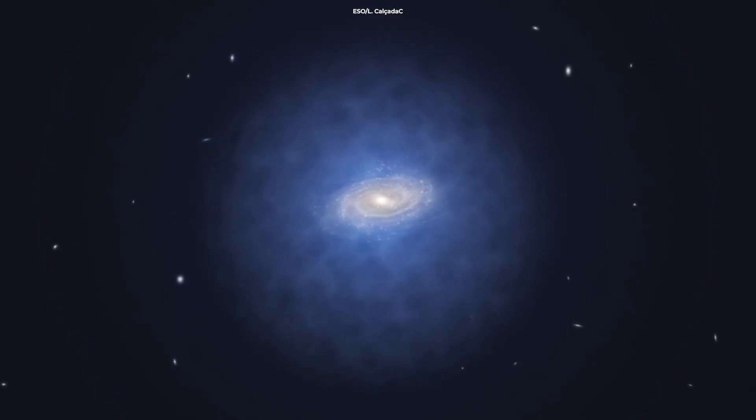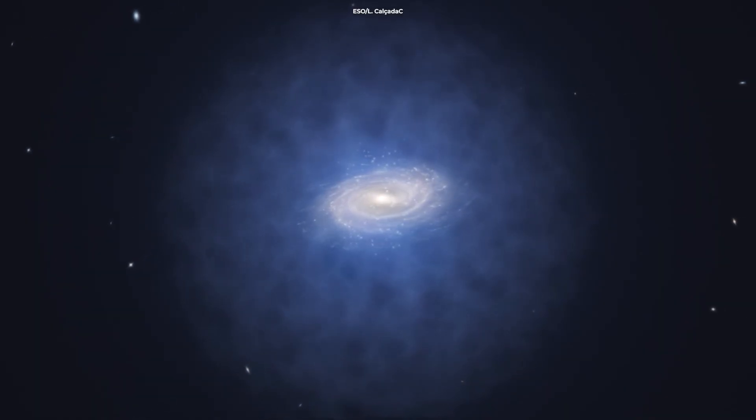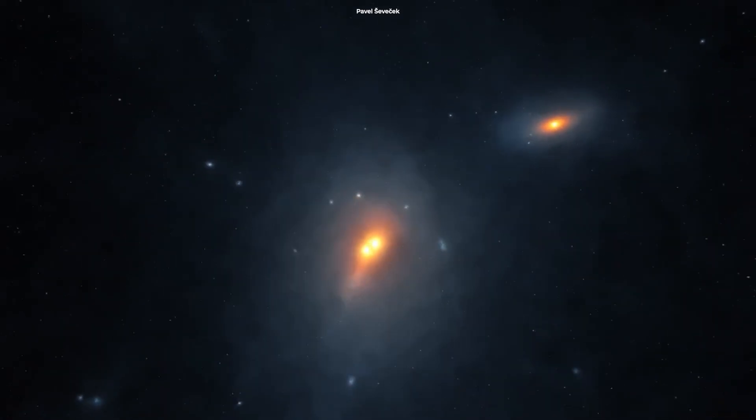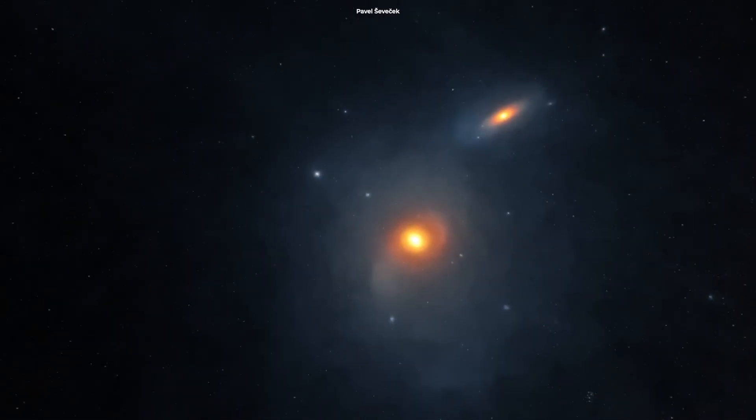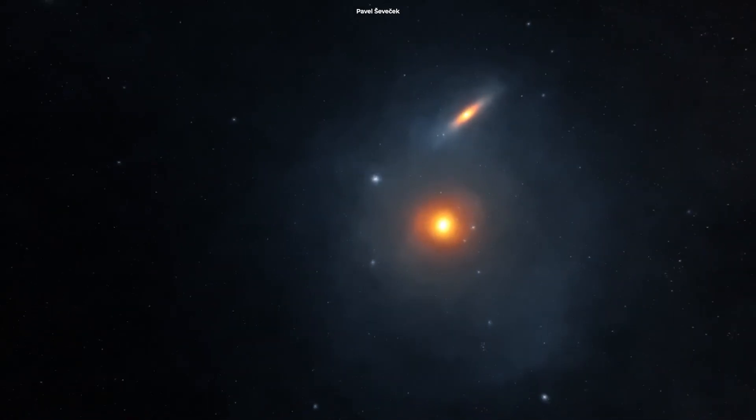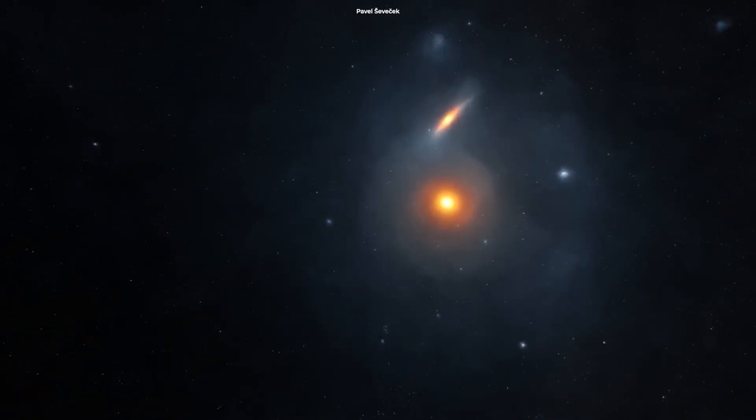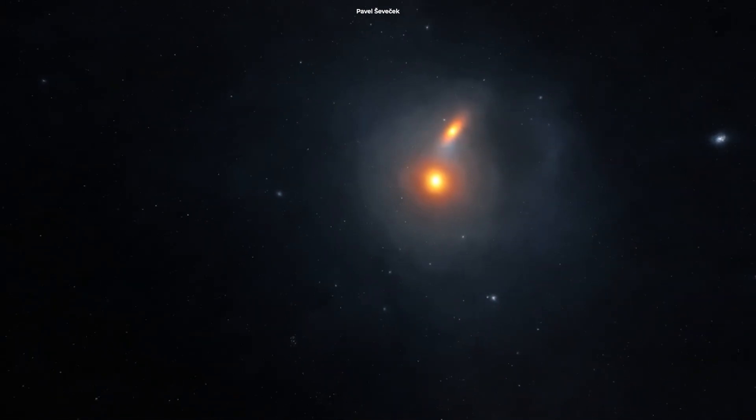Another theory as to why these supermassive black holes end up in the center of galaxies is that a dark matter halo that theoretically surrounds every galaxy helps to focus and concentrate material during galactic formations. Scientists theorize this material coalesces into the central supermassive black hole, while the rest becomes the stars of the galaxy.